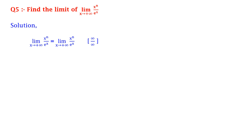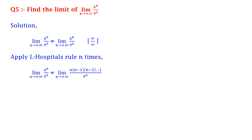Fifth, find the limit: limit x tends to plus infinity of x^n upon e^x. Solution: this is again infinity upon infinity form. We need to apply L'Hôpital's rule n times, because until the nth derivative, x remains in the numerator and the form stays infinity upon infinity. After n differentiations, the numerator has no term of x. Therefore, we get limit x tends to plus infinity of n(n-1)(n-2)...1 divided by e^x, which equals limit of n factorial upon e^x, which equals n factorial times 0, which is equal to 0.